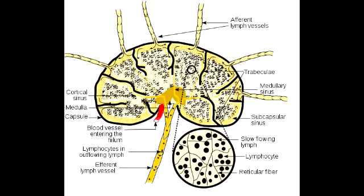What is the function of afferent lymphatics in lymph nodes? Afferent lymphatics bring the material into the lymph nodes. The function of efferent lymphatics is to take the material away from the lymph node. So remember: afferent brings the material in and efferent takes it out. In a lymph node, there are many afferent lymphatics and one or more efferent lymphatics.